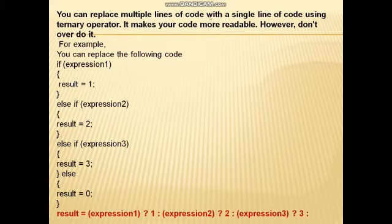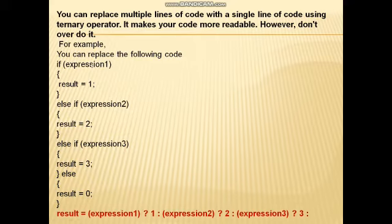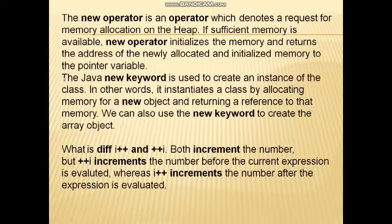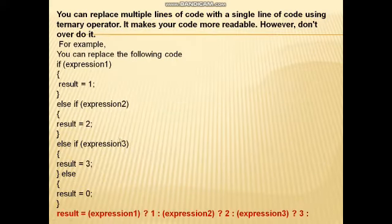You can replace multiple lines of code with a single line using the ternary operator, which makes your code more readable. However, don't overdo it. For example, nested ternary can replace: if expression1 result=1, else if expression2 result=2, else if expression3 result=3, else result=0 — with: result = expression1 ? 1 : expression2 ? 2 : expression3 ? 3 : 0. We can convert this if-else code into ternary operator code.